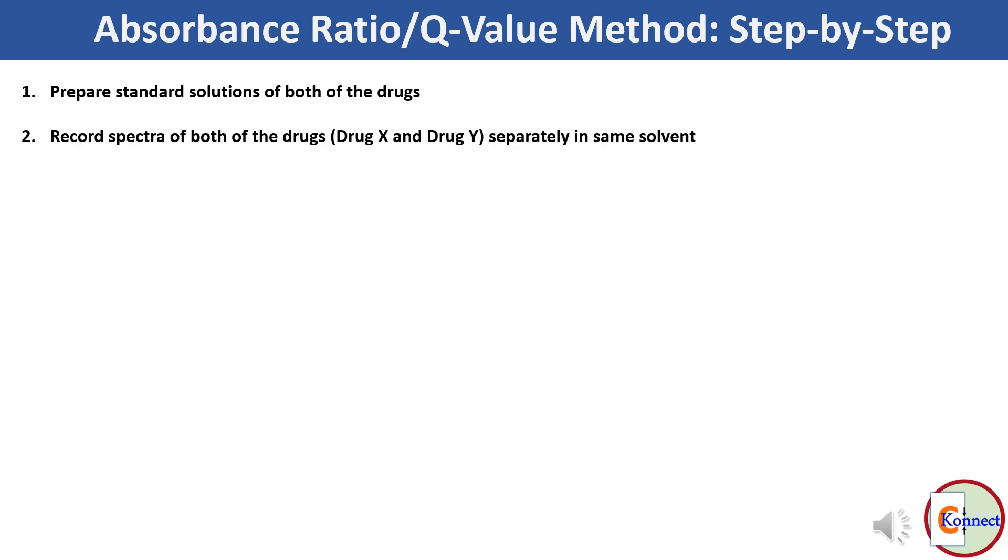Then record spectra of both of the drugs, say drug X and drug Y, separately in the same solvent. Get an overlay spectrum of both of the drugs.